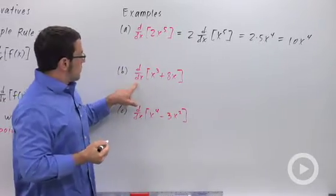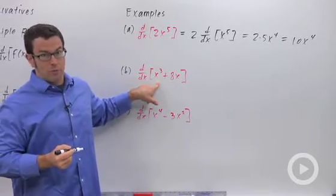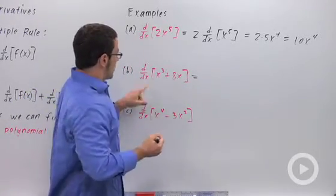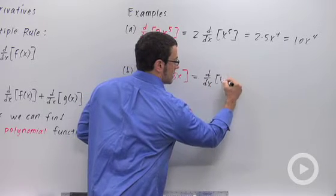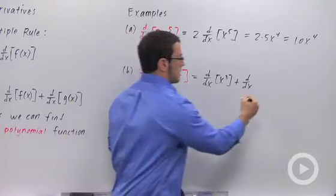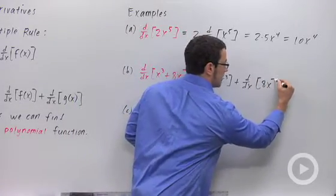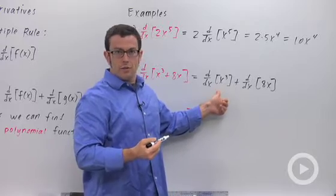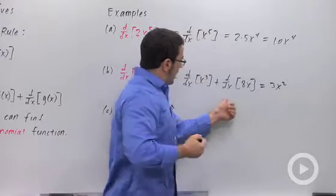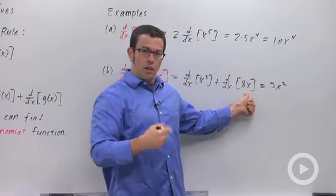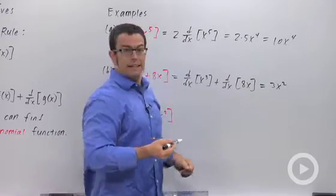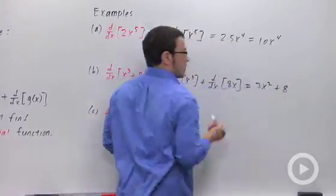Another example: the derivative with respect to x of x cubed plus 8x. Well, here I use the second property, the sum rule. This is going to equal the derivative of x cubed plus the derivative of 8x. Now, x cubed, that's just a power function, and its derivative is going to be 3x squared. 8x is a linear function. We differentiated these earlier. We know that the derivative of a linear function is just its slope. In this case, 8. And that's our answer: 3x squared plus 8.